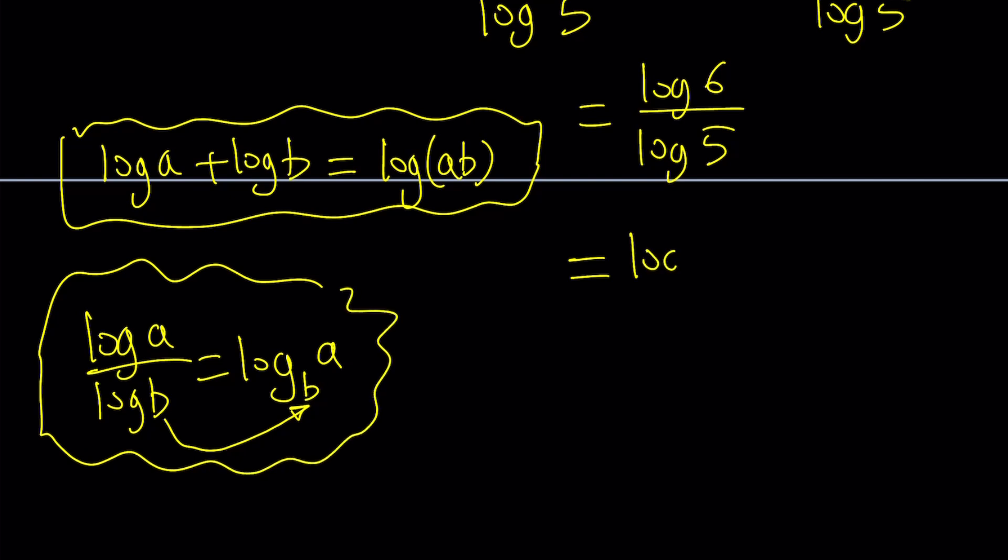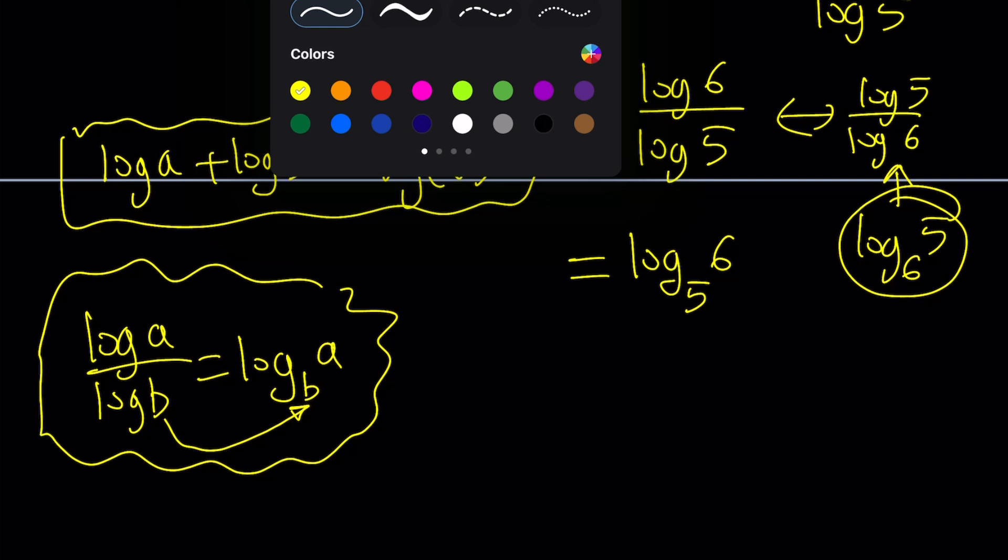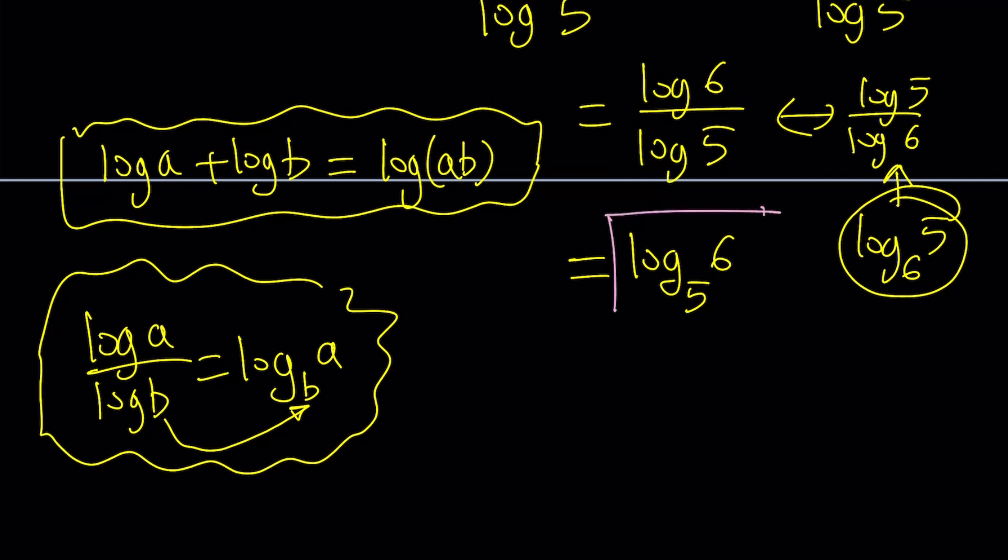Now this can be written as log 6 with base 5. If you write log 5 with base 6 they're not the same, they're actually reciprocals. So that will be the answer in pretty much the simplest form. If you use a calculator it's only going to be an approximation. That's why this is the exact value. This brings us to the end of the first method only.